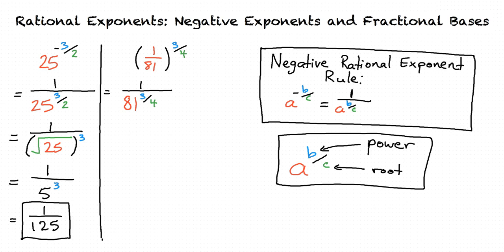Remember that 1 to the 3 fourths power is still 1. Let's do the same thing we did in the first problem and focus on the denominator, 81 to the 3 fourths power.